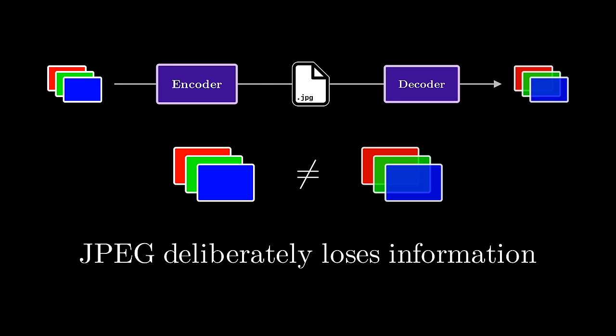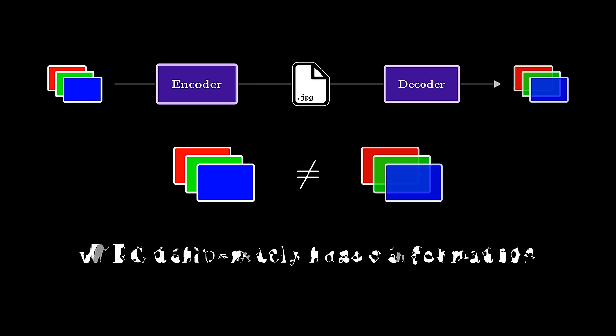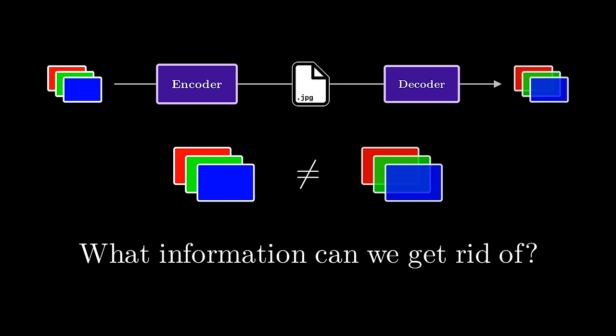To get compression on the levels of 5%, there's really no other option than to actually discard some information from our original image. The fun question to ask is: what sort of information from an image can we get rid of, and how do we get rid of it? Answering this question is going to be the primary focus of our journey into understanding JPEG.